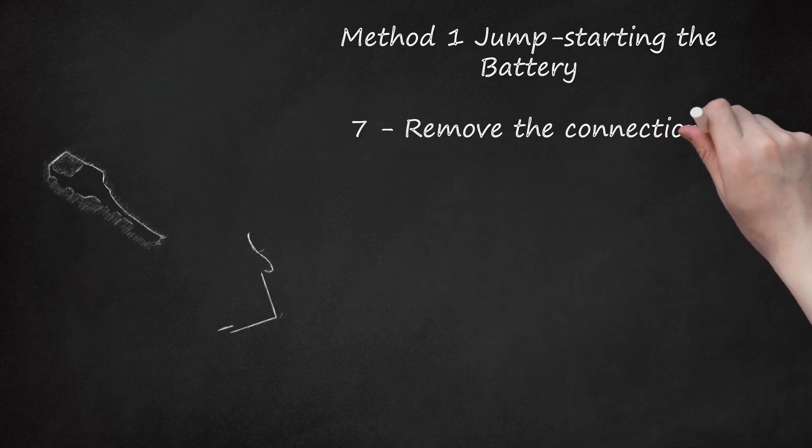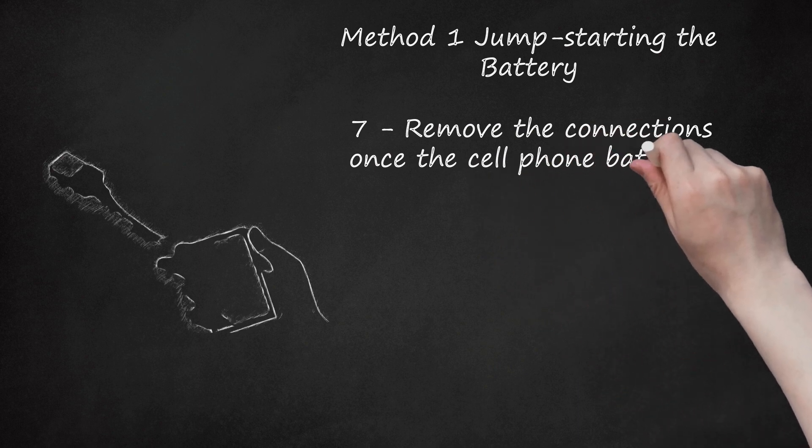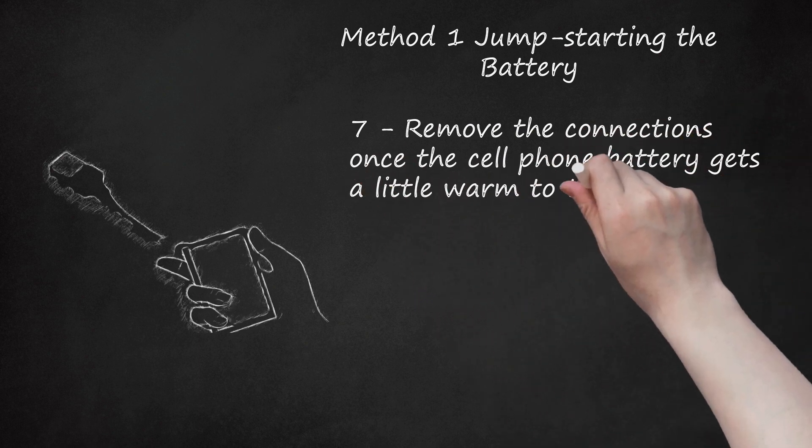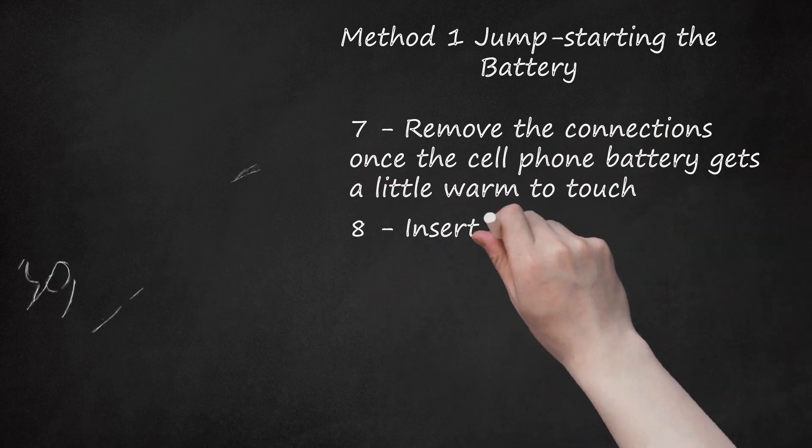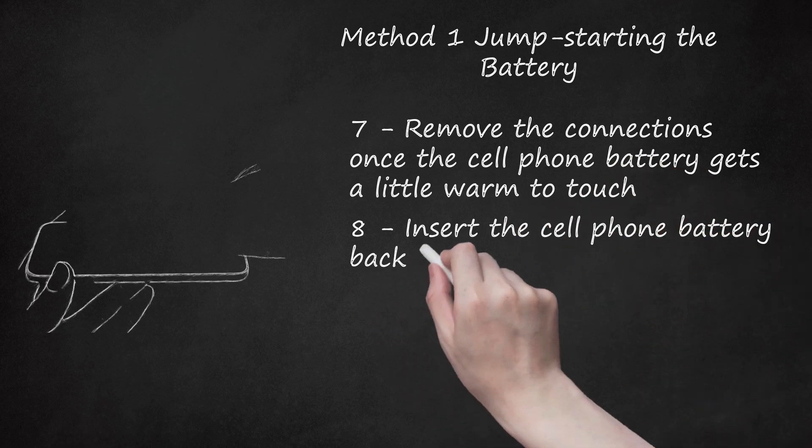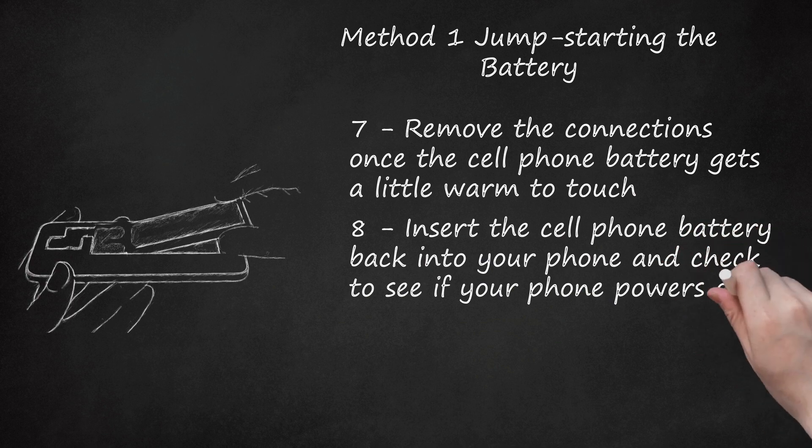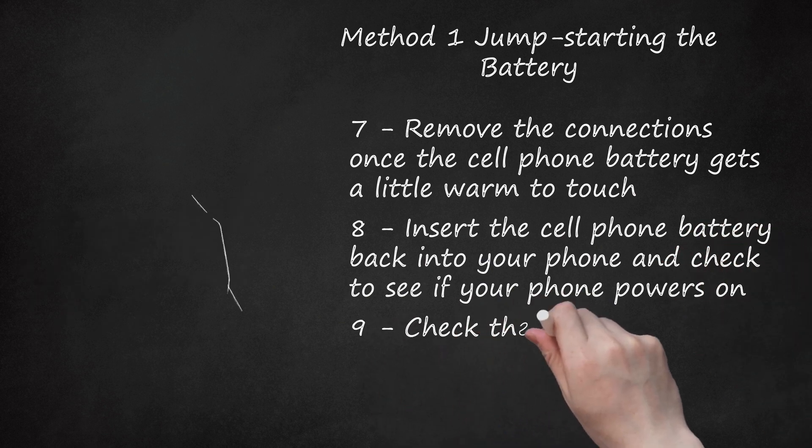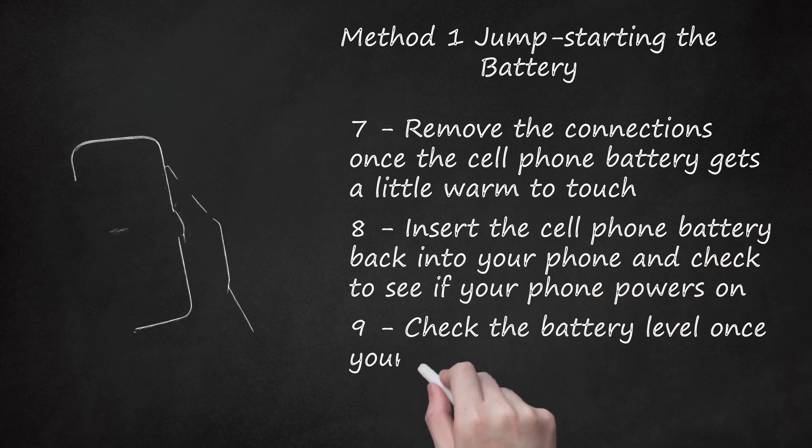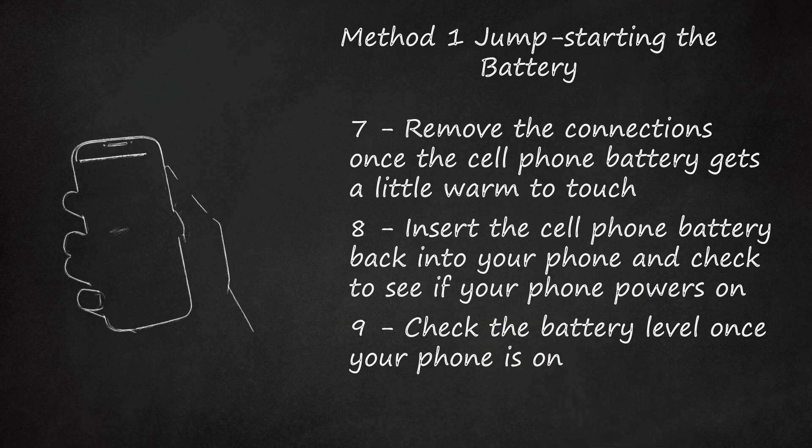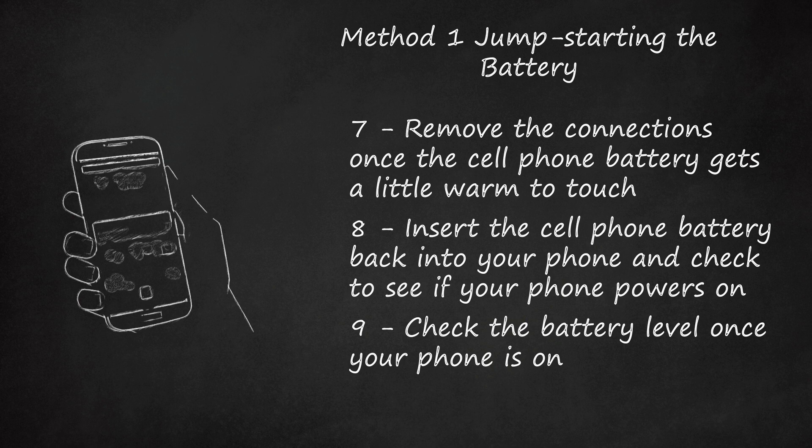Remove the connections once the cell phone battery gets a little warm to touch. Insert the cell phone battery back into your phone and check to see if your phone powers on. Check the battery level once your phone is on. If the level is low, plug the phone into a charger and wait until it is fully charged.